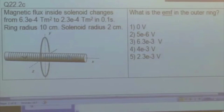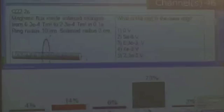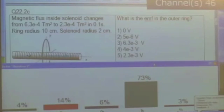EMF in the outer ring. So again, think about definition of Faraday's law here. So, okay, answer number 4, 4 times 10 to the minus 3 volts.